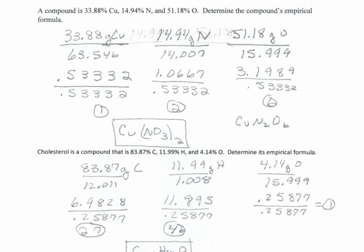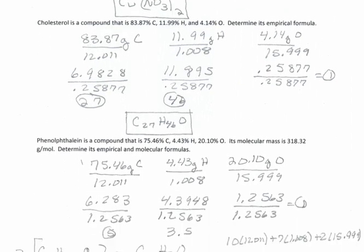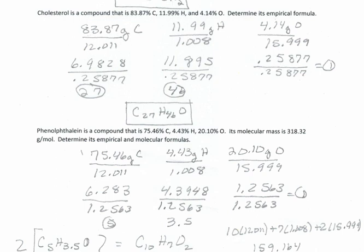Next: determine the empirical formula for cholesterol. Using the given percentages, take a 100g sample so each percent becomes grams, then divide each by their atomic masses from the periodic table to get moles. Divide the least moles into all the larger: dividing into itself gives one, the next gives 46, and the last gives 27. So cholesterol has an empirical formula of C₂₇H₄₆O — a bit larger than typical, but cholesterol is an organic compound and much larger than we normally see.